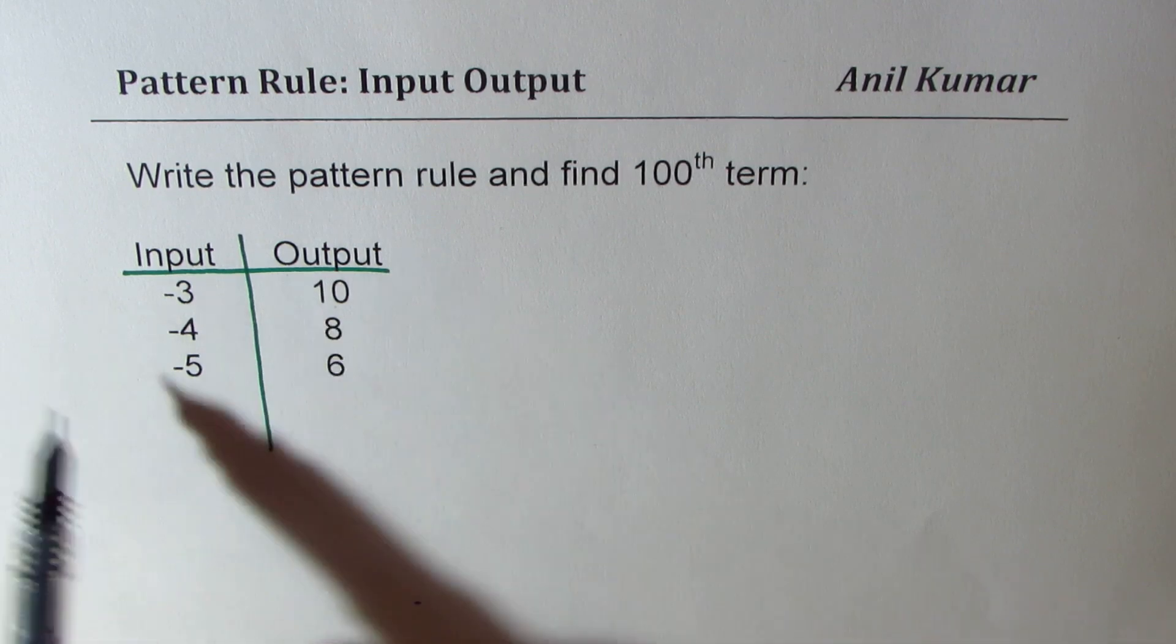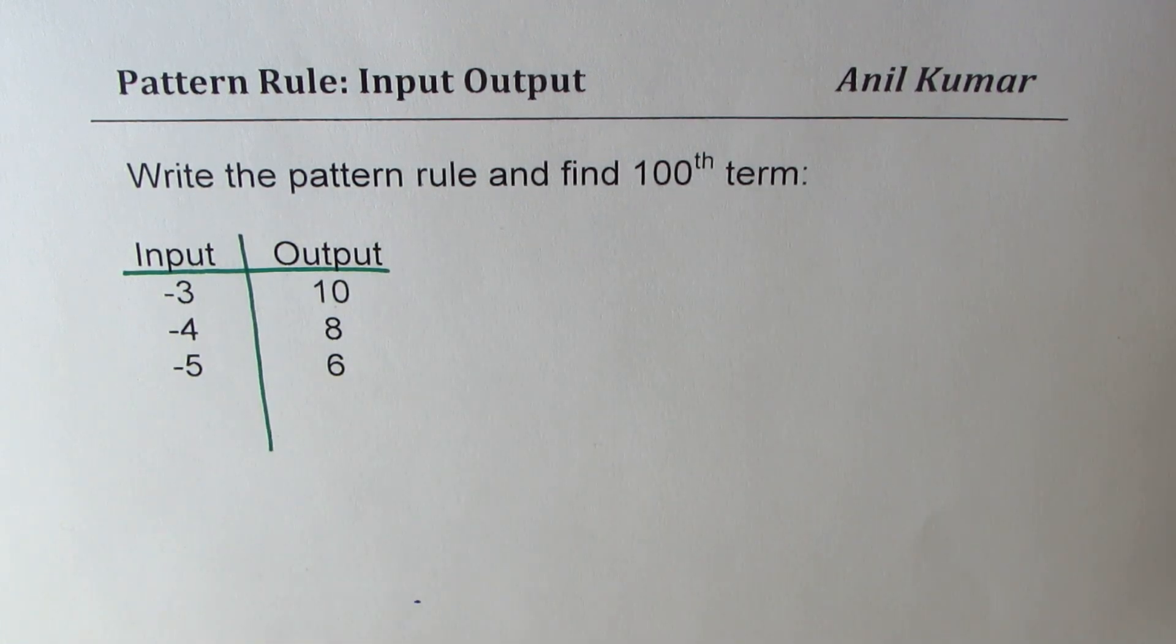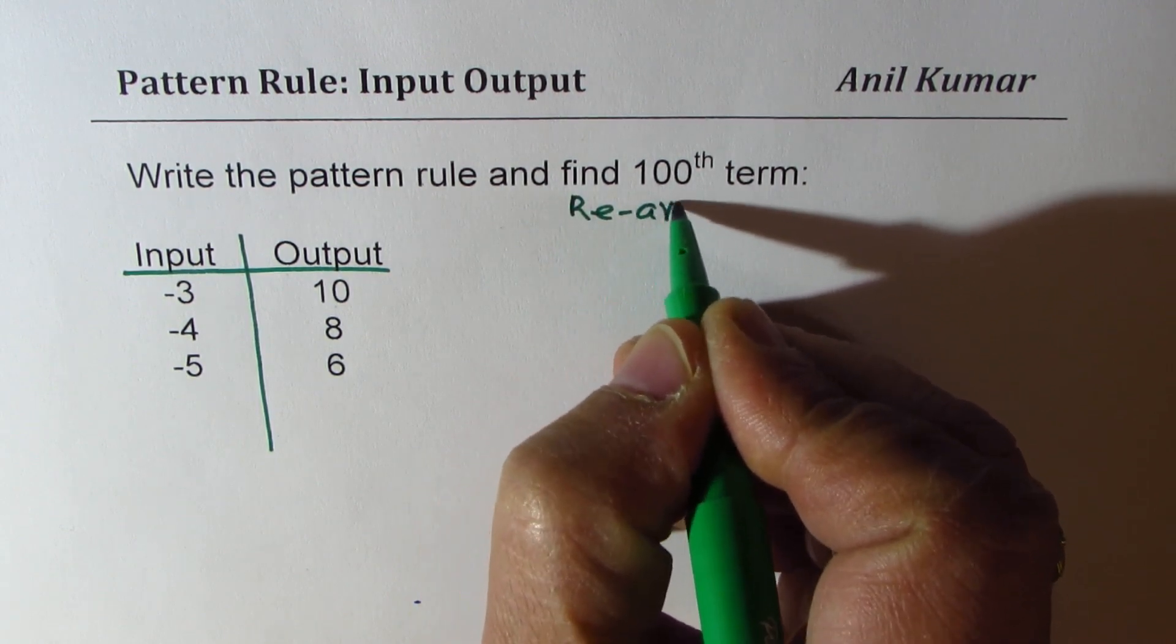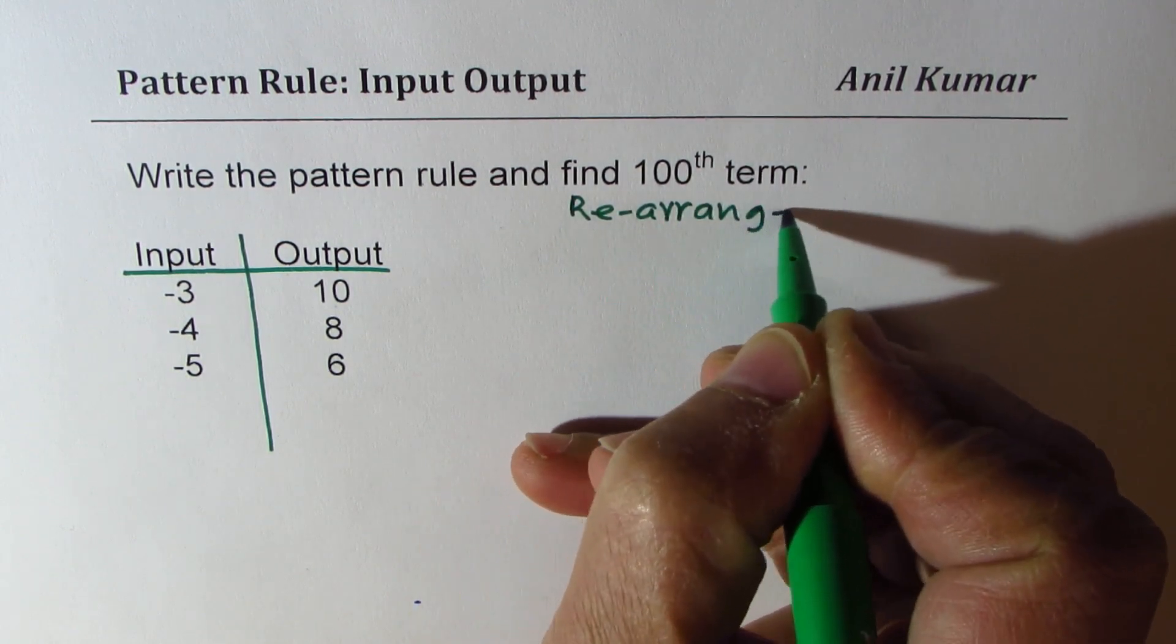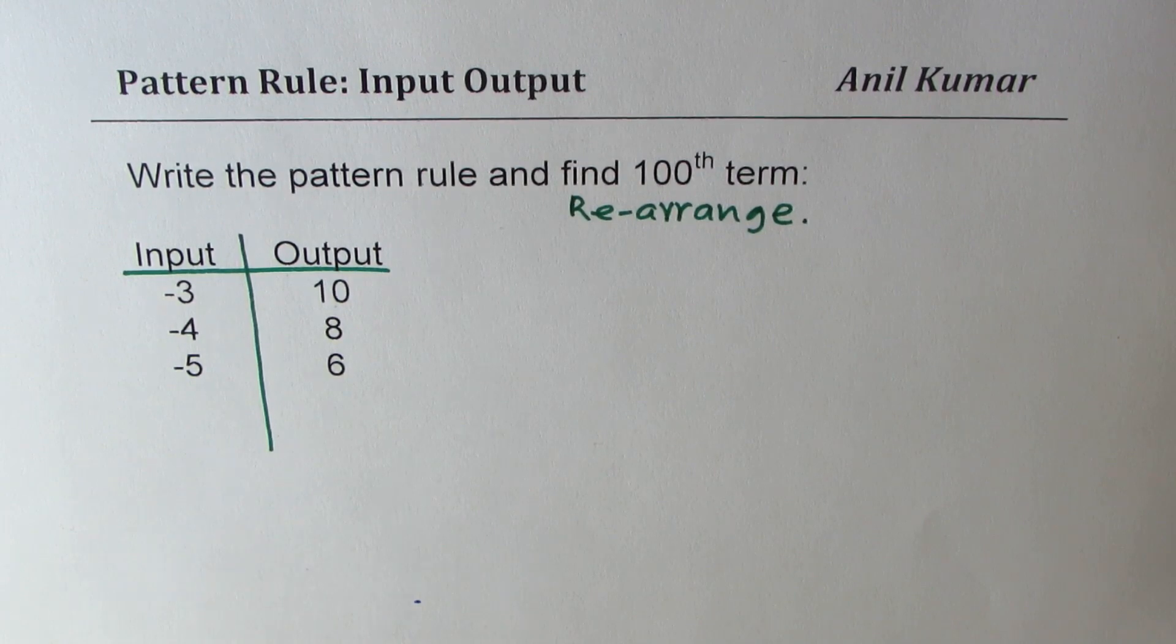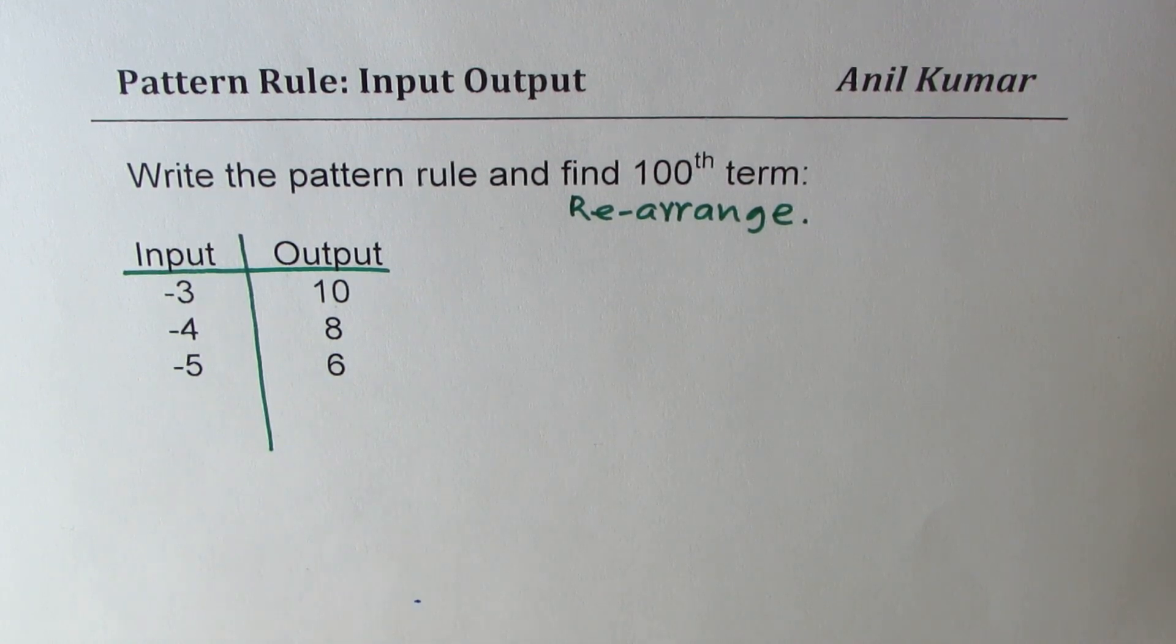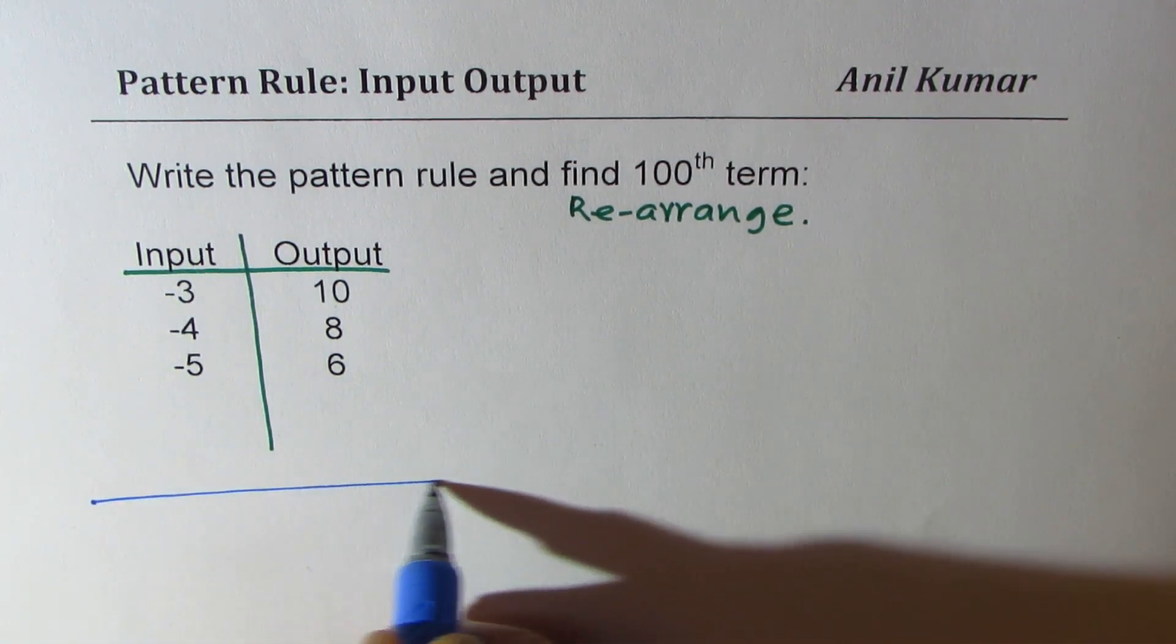So we'll rewrite our list. First question here is to rearrange to find the hundredth term. So the idea is that we should write them in increasing order. Why am I doing so? Let me explain you that part also.